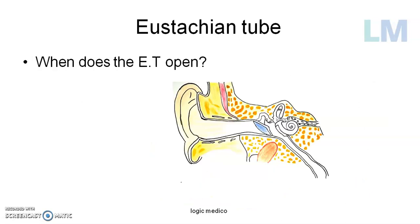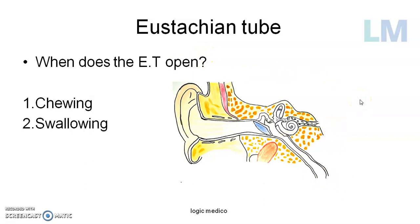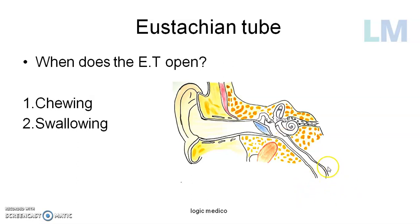So when does the eustachian tube open? It opens during the following activities: chewing — whenever you are chewing or mastication, each time you clench your jaw the eustachian tube opens, thereby ventilating the middle ear. Also during swallowing — when you swallow, food from the oral cavity goes into the oropharynx, the soft palate is elevated, and the muscles of the soft palate, which take origin near the eustachian tube, will dilate it. So the eustachian tube opens and air from the nasopharynx enters, because the nasopharynx is cut off from the oropharynx by the soft palate during swallowing.